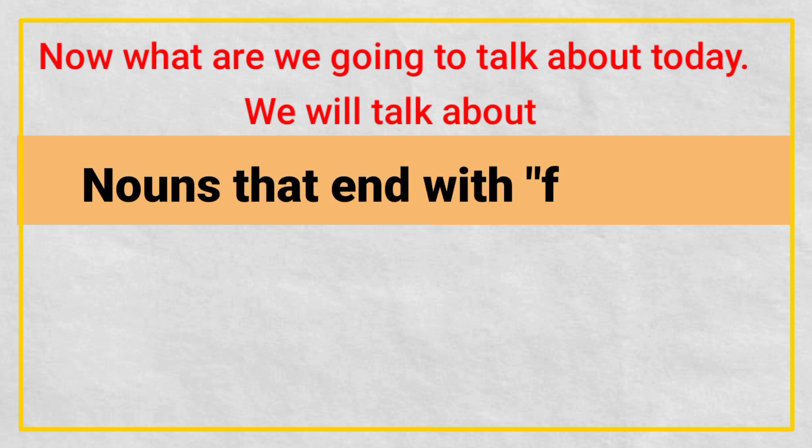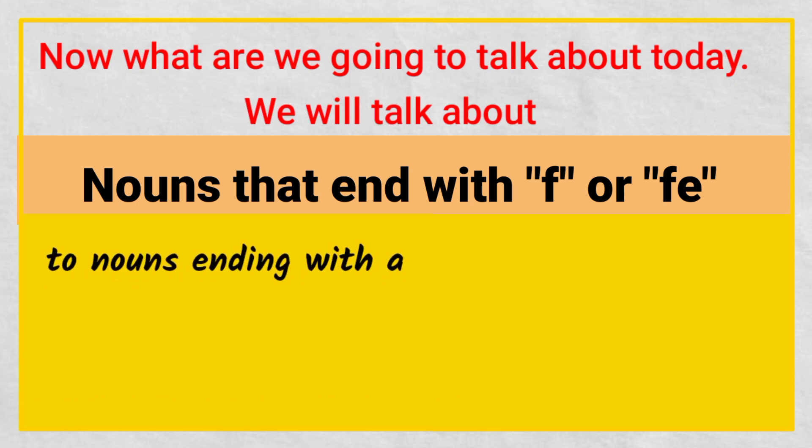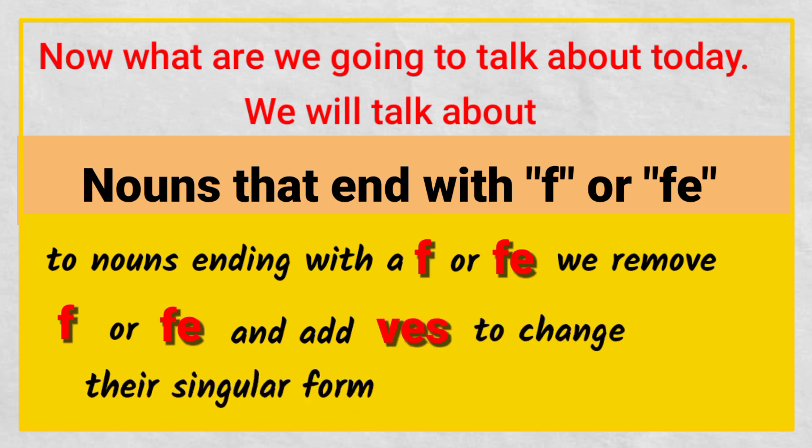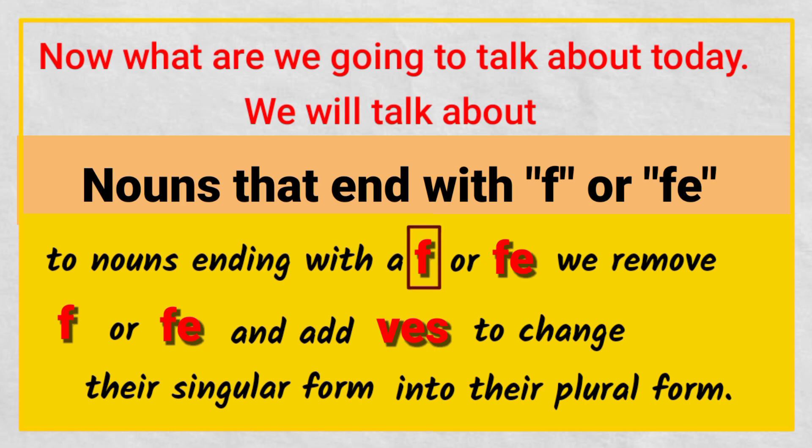Now what are we going to talk about today? Today we will talk about nouns that end with F or FE. To nouns ending with F or FE, we remove F or FE and add VES to change their singular form into their plural form. Let's understand with the help of examples.